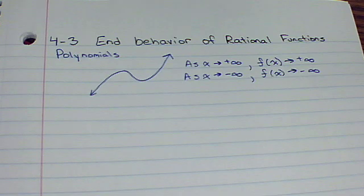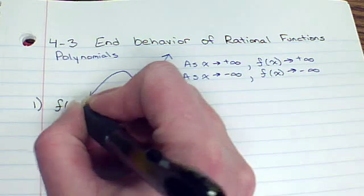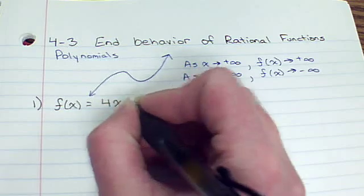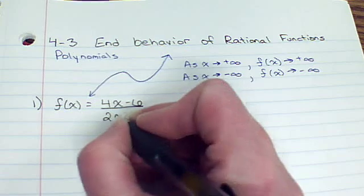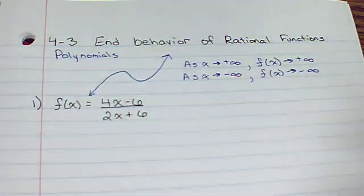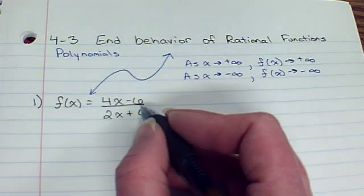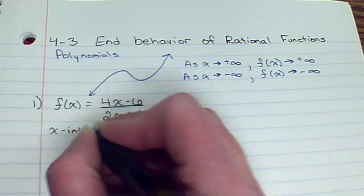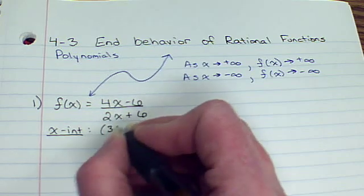What we want to look at is what happens with rational functions. So let's look at f of x equals 4x minus 6 over 2x plus 6. Let's see what we know already. Do we know our x-intercept? x-intercept comes from looking at the numerator. So what makes 4x minus 6 equals 0? Our x-intercept would be 6 divided by 4, which is 3 halves.